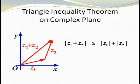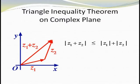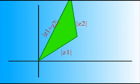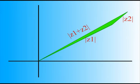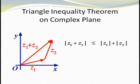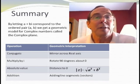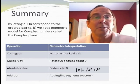An interesting property that results from this geometric interpretation is the triangle inequality theorem. This theorem states that the absolute value of z1 plus z2 is less than or equal to the absolute value of z1 plus the absolute value of z2. Since the absolute value of z is the length of the line segment joining 0 to z, this means that by joining two line segments of length |z1| and |z2|, you can't create a new segment longer than their sum — equivalently, one side of a triangle can't be longer than the sum of the other two sides. In summary, we showed that by letting a plus bi correspond to the ordered pair (a, b) we could create the complex plane, with applications including conjugates, multiplication by i, absolute value, and complex addition.